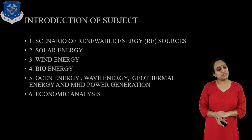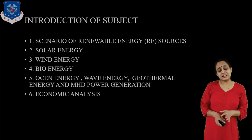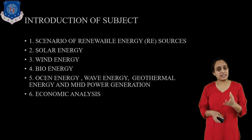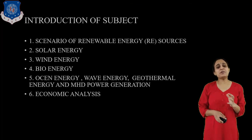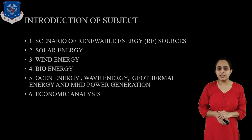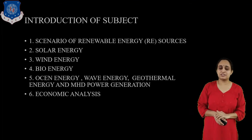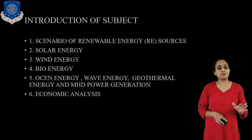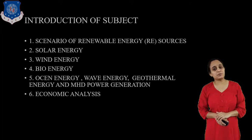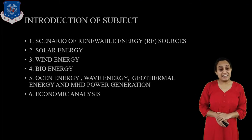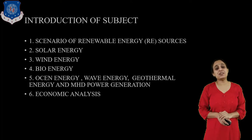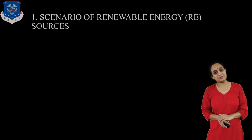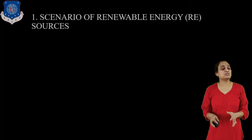Now let us start with the subject content. This will contain a total of six chapters. The first chapter is the scenario of renewable energy sources. The second chapter will be on solar energy. The third on wind energy. The fourth on bioenergy. The fifth on ocean and wave energy, geothermal, and MHD power generation. And chapter number six is economic analysis. Now let us start with our first chapter: Scenario of Renewable Energy Sources.